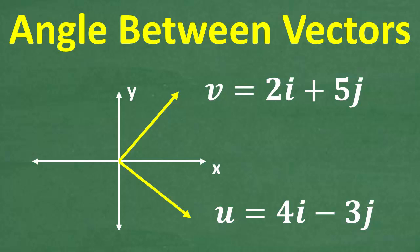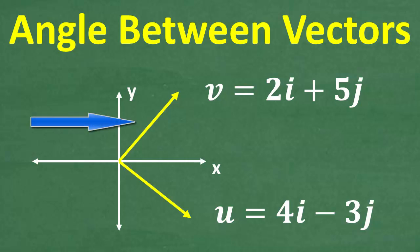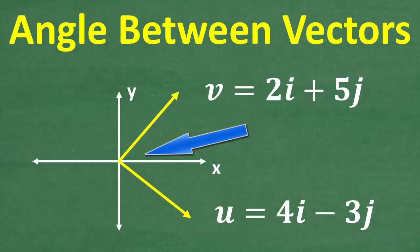Okay, so we've got two vectors here. This is one vector and this is another vector. And we want to find the angle between vectors. So maybe this is a quick refresher about that, but I'm going to get into exactly what we need to do here step by step.